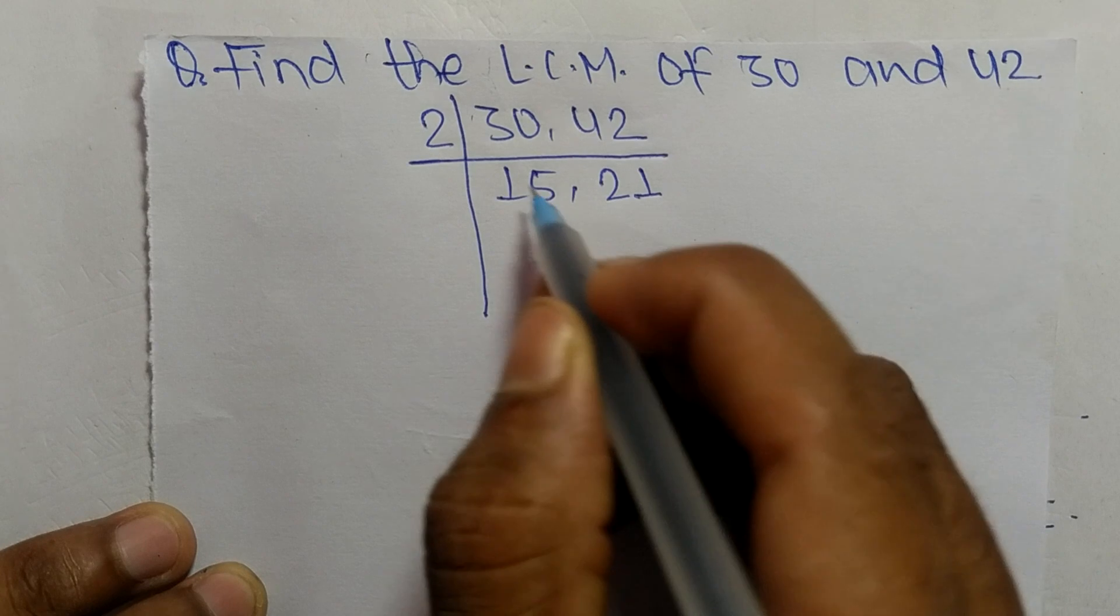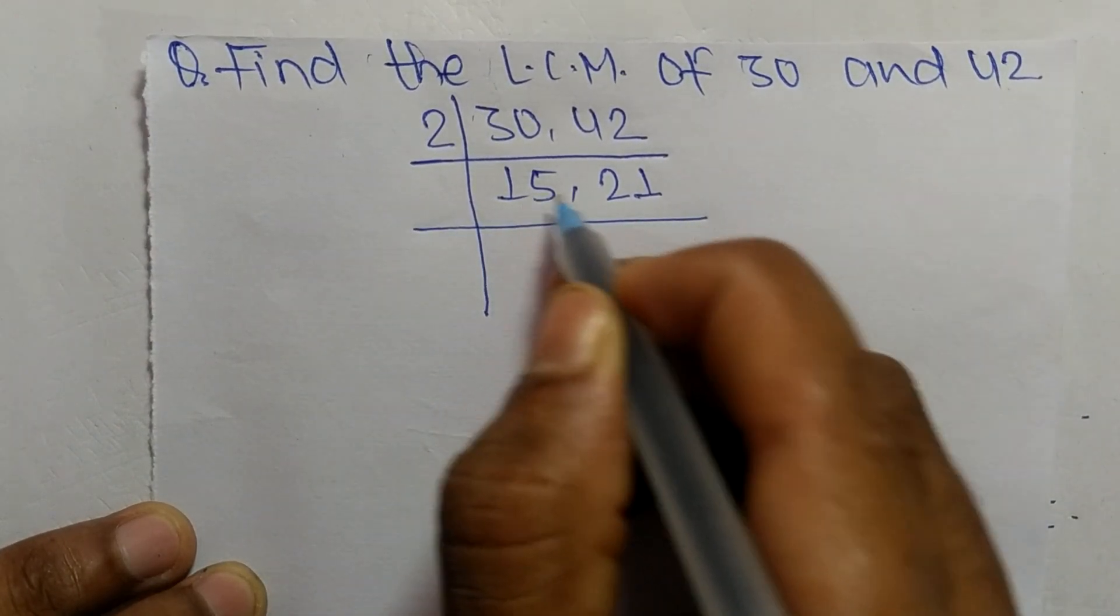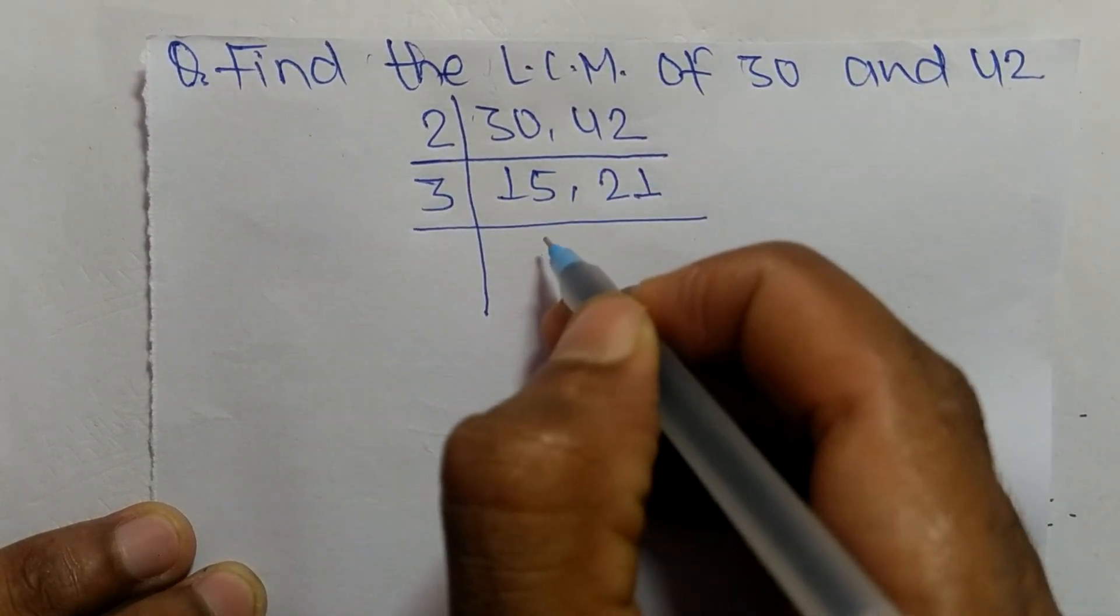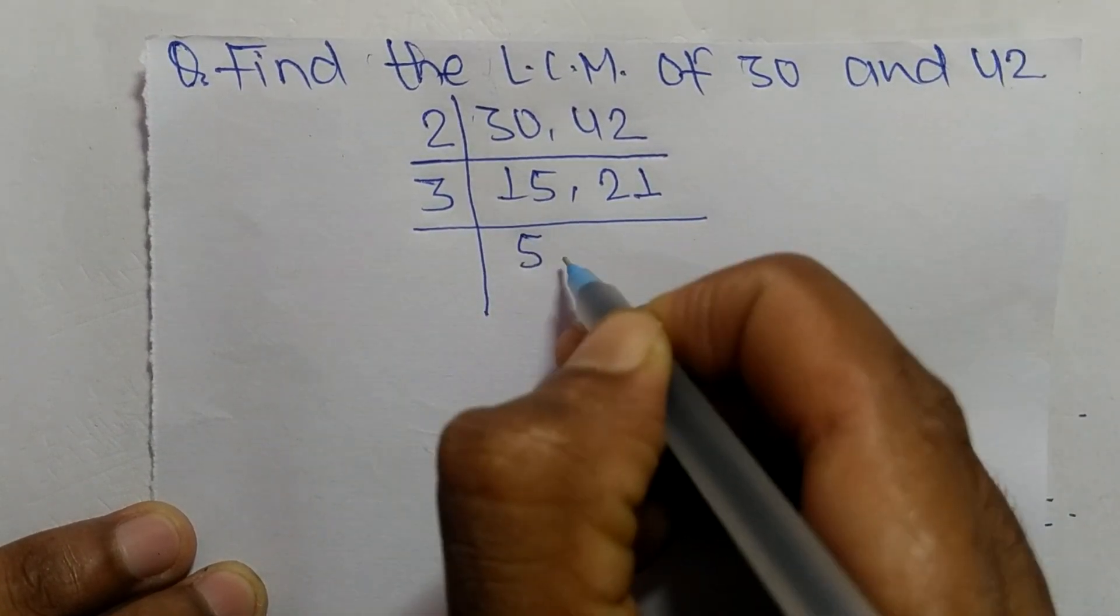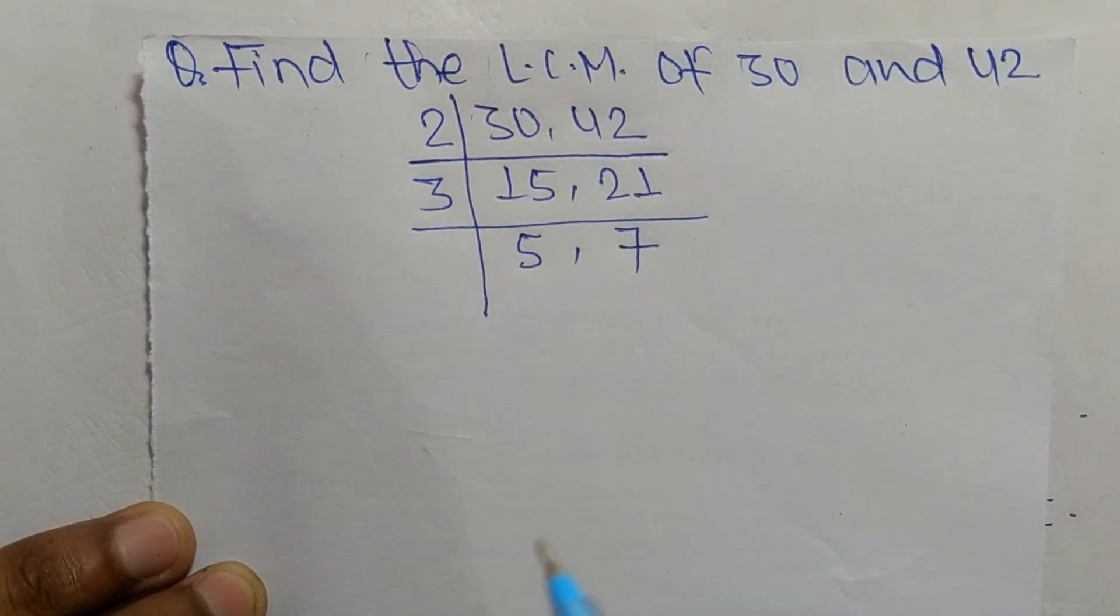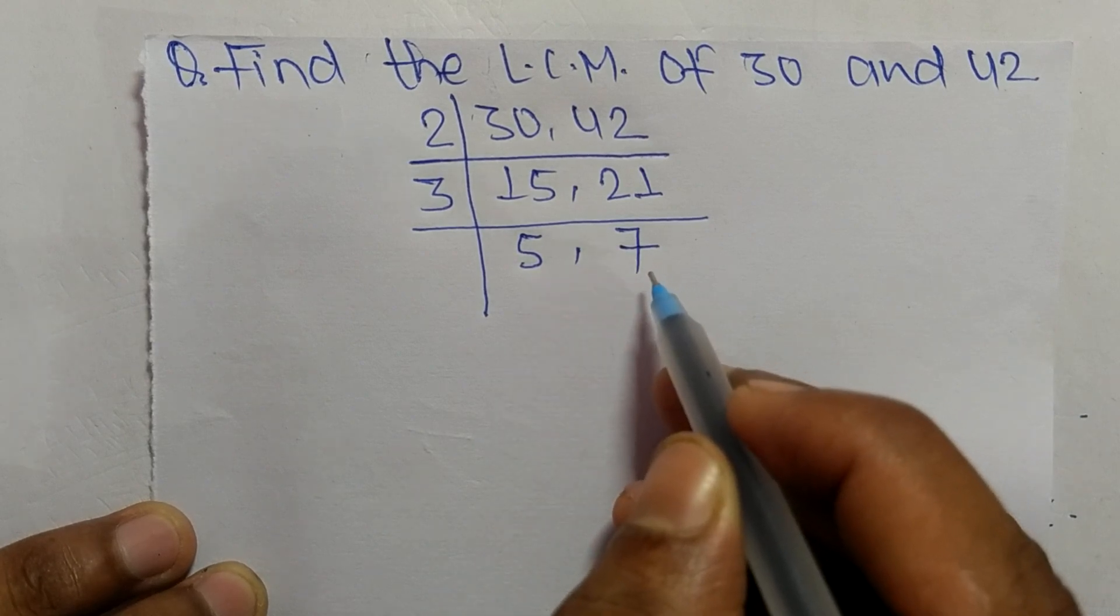So we choose the number greater than 2 that can exactly divide 15 and 21. The number is 3. So 3 times 5 means 15, and 3 times 7 means 21. Now we have 5 and 7 which are not exactly divisible by the same number.